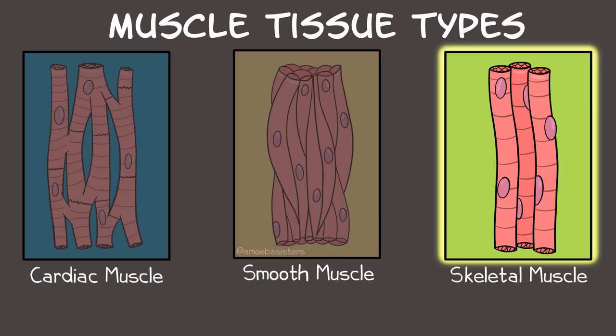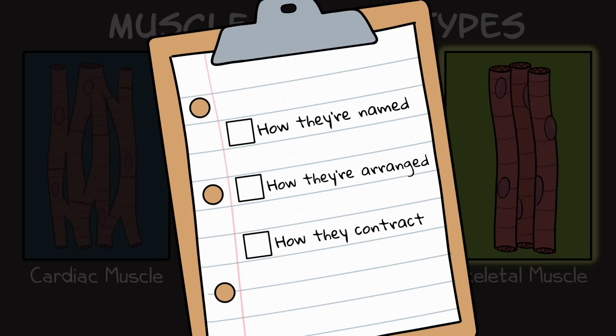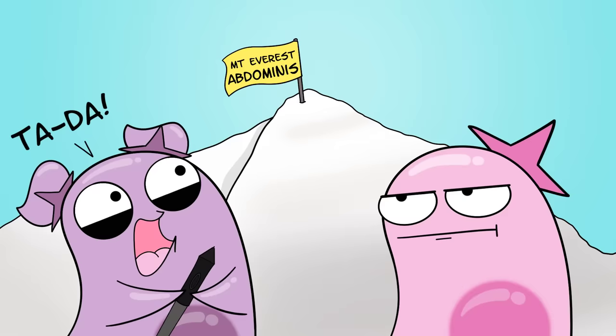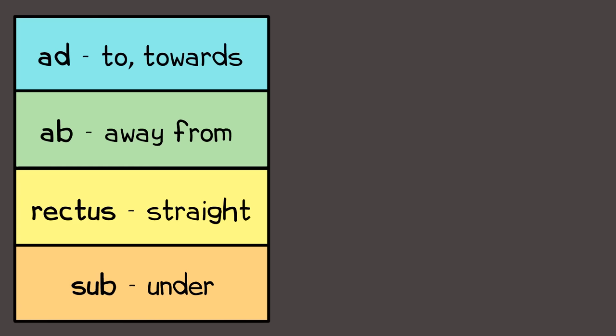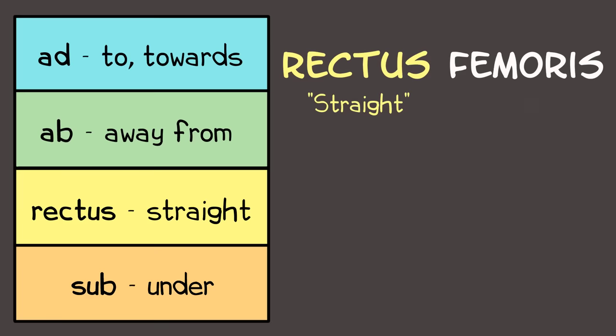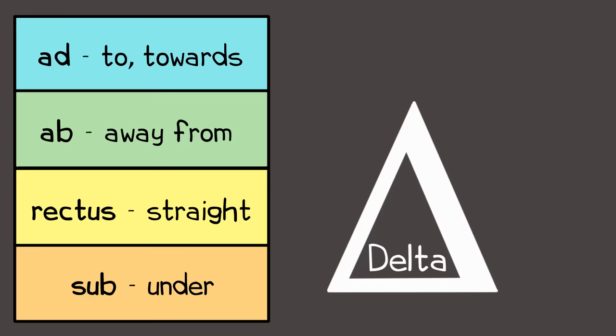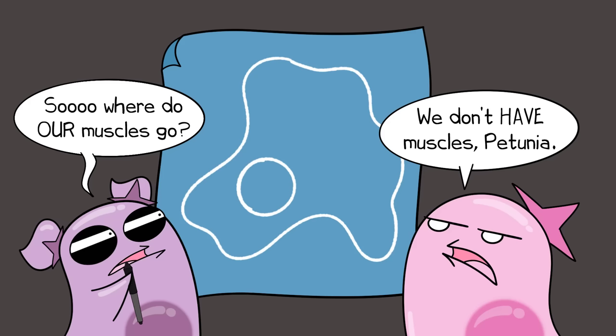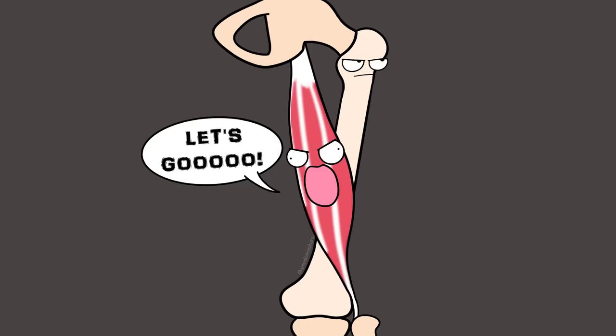For the rest of this video, we're really going to focus on skeletal muscle. Let's look at how they're named, how they're arranged, and how they contract. Many skeletal muscles are named by their location or their shape. Many have Latin or Greek root words in them, so checking out a root word definition list can be really helpful. For example, rectus femoris is a muscle on the thigh, and rectus abdominis is a muscle on the abdomen. The Greek letter delta looks like a triangle, which is a fitting name for deltoids — a triangular shaped muscle.